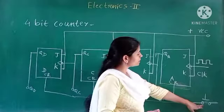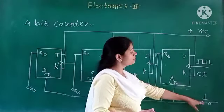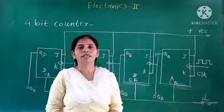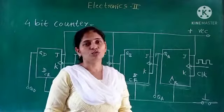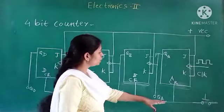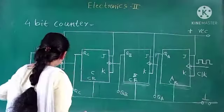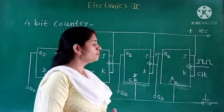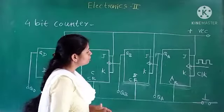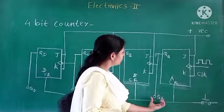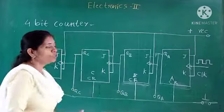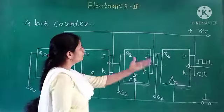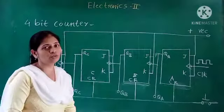As we press the switch for the clear facility, all the flip-flops will be set to 0. So we will get the output QA, QB, QC, and QD all equal to 0. First of all, all the flip-flops are cleared, and then we get output 0, 0, 0, 0.